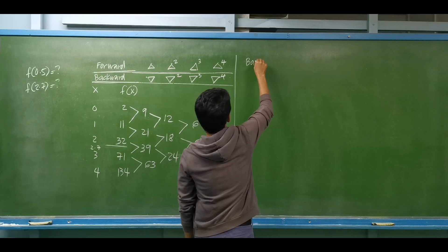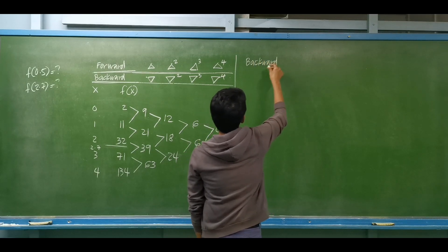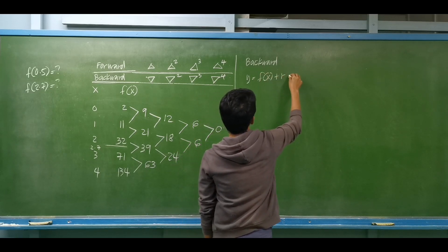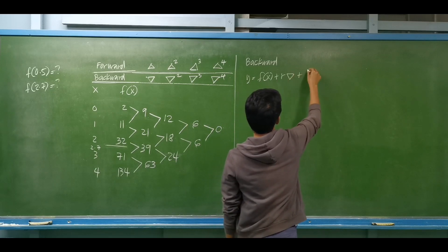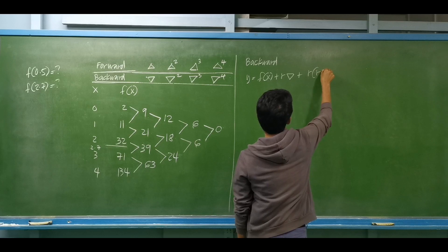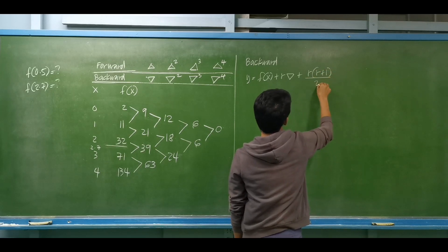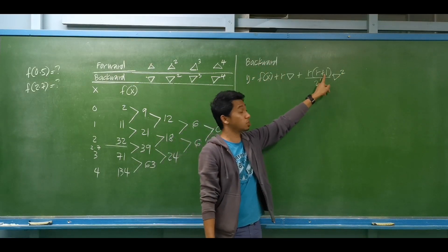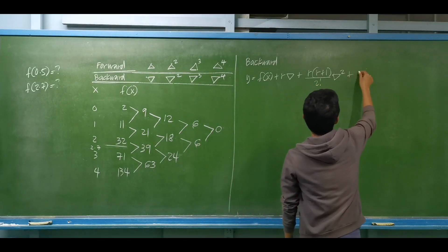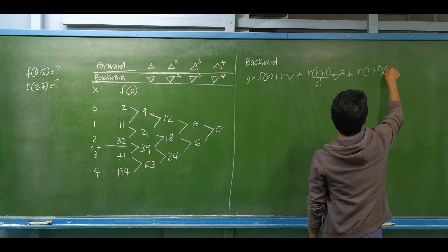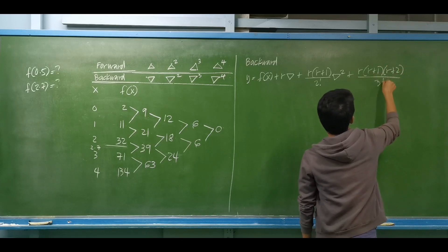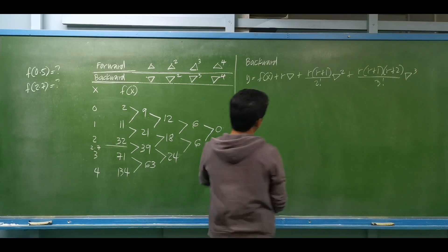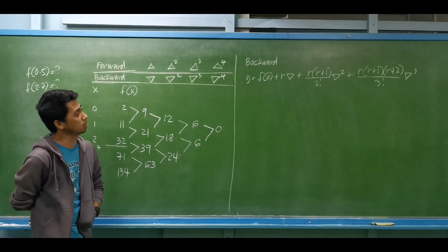For the backward Newton-Gregory formula: y = f(xₙ) + r·∇ + r(r+1)/2!·∇² + r(r+1)(r+2)/3!·∇³. Compared to the forward formula, instead of minus we add in each term. This is our formula for the backward Newton-Gregory method.